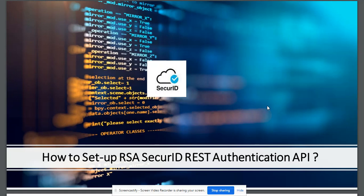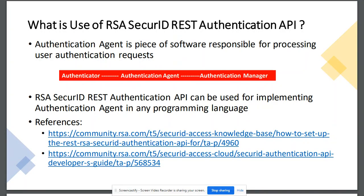Today we learn about how to set up RSA Secure ID REST authentication API. The RSA Secure ID system consists of an authenticator, authentication agent, and authentication manager. The authentication agent is a piece of software which is responsible for processing user authentication requests.